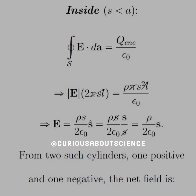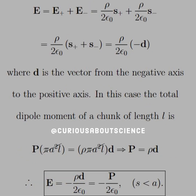From this, we can construct two such cylinders — one positive and one negative — and add them together to find the net field. This net field is E-plus plus E-minus, where those directions are based on the polarization from the charge density rho. A little bit of factoring gets us to the expression where we're just working with the s-vectors, and if you recall, the dipole is from the negative to the positive, so adding them together gives the negative displacement vector d.